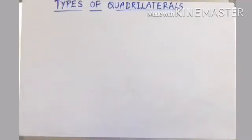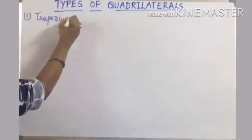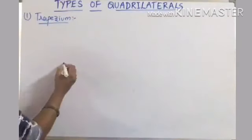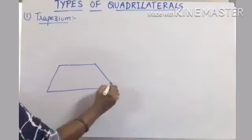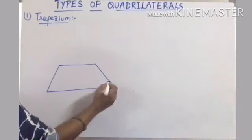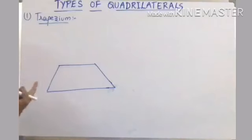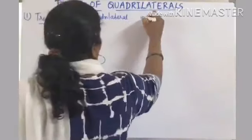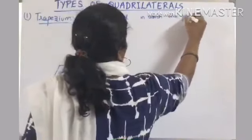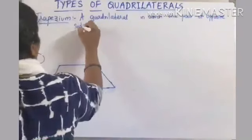Now, the types of quadrilaterals. First one is the trapezium. A trapezium is a quadrilateral in which one pair of opposite sides are parallel. There are two pairs of opposite sides in total. Here, AB is parallel to DC, but AD is not parallel to BC — so only one pair is parallel.